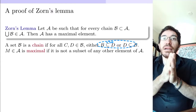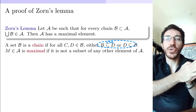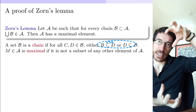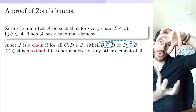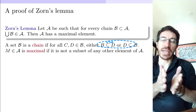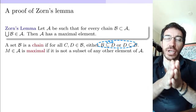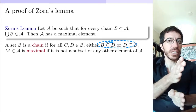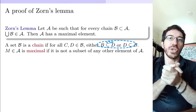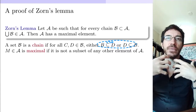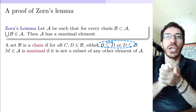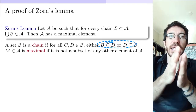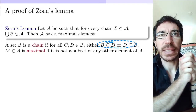So this says that whenever you take a chain, the union of the chain — which is like the biggest one, since they are all nested inside each other — you still get something that belongs to the collection. The collection doesn't need to be a chain, but whenever you take a chain, the union belongs to the collection. It's kind of closed — this collection is closed under union of chains. If you have this, then the collection has a maximal element.